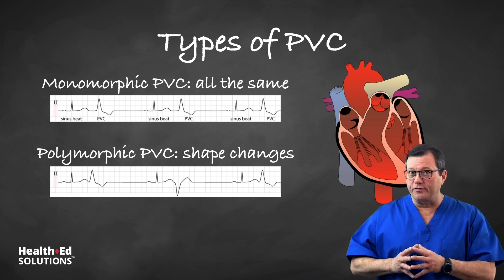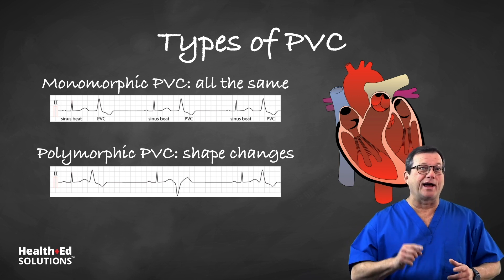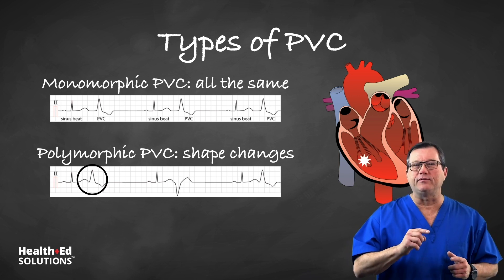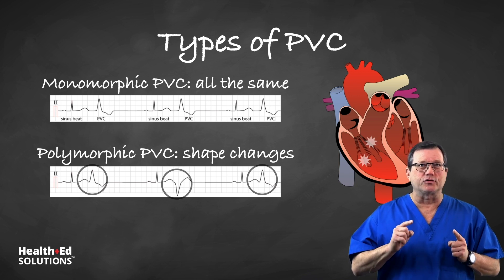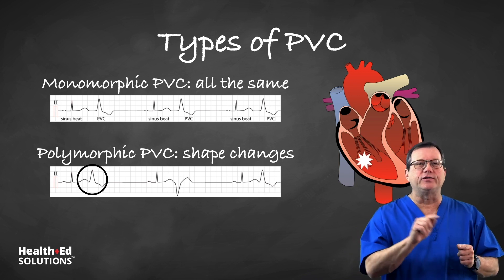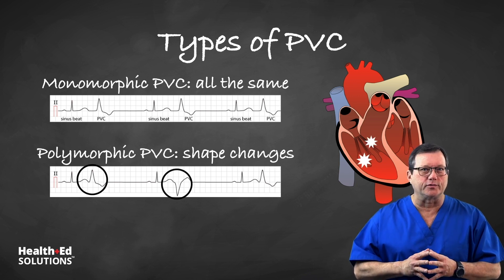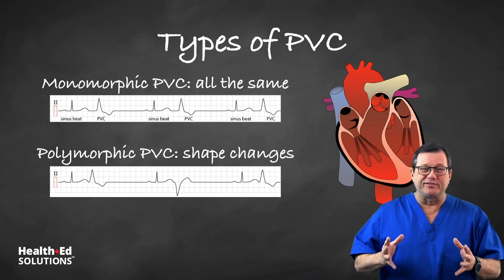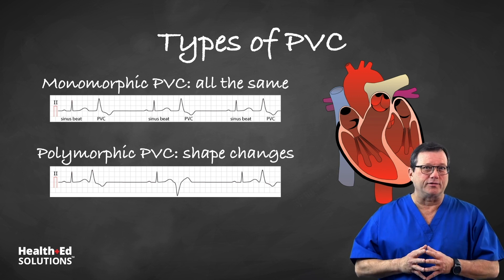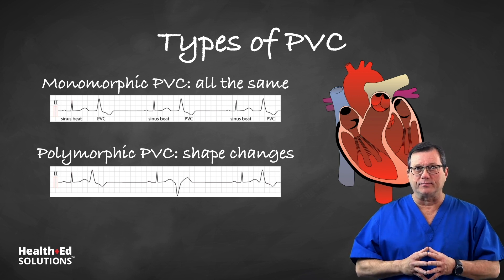Polymorphic PVCs — poly meaning many — have a shape that changes on the ECG tracing. This means you have multifocal PVCs, originating in different areas of the ventricles. This speaks to how diseased the heart is; polymorphic PVCs can indicate a more diseased heart.